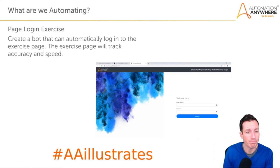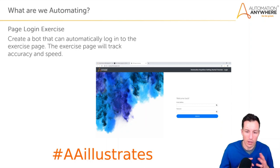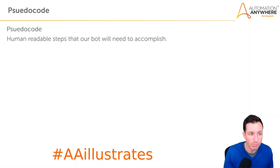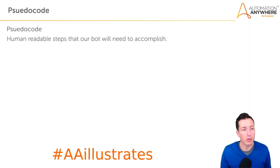The exercise we're going to be automating today is a page log exercise from Automation Anywhere. It allows you to fill in an email address, fill in a password, hit sign in, and then it gives you feedback on how long it took and your accuracy. We're going to use this to gamify what we're going to build today and get feedback to make sure our bot is doing what we expect.